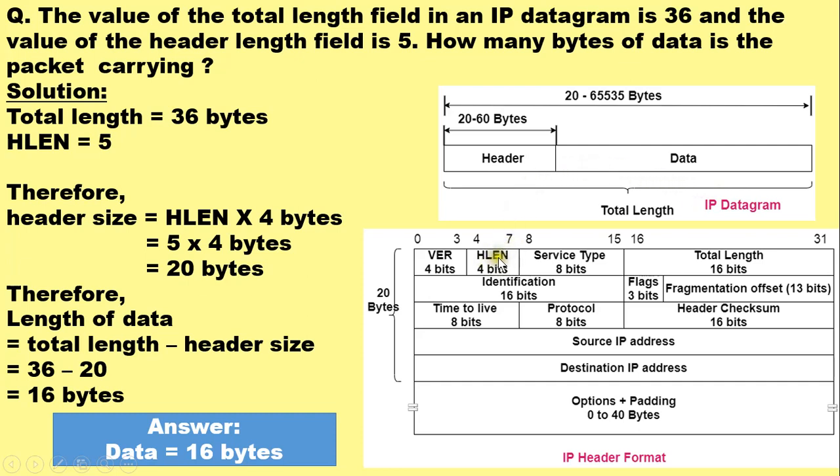Here the HLEN field value always specifies the length of the IPv4 header in multiples of 4 bytes. Why multiples of 4 bytes? Because each row in this IPv4 header occupies 32 bits. 0 to 31 is 32 bits; 32 bits means 4 bytes.